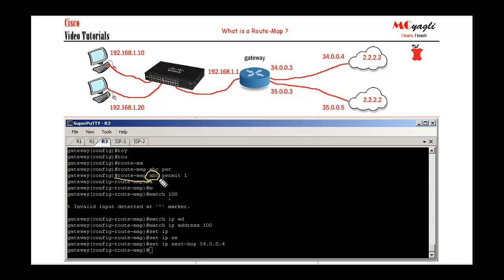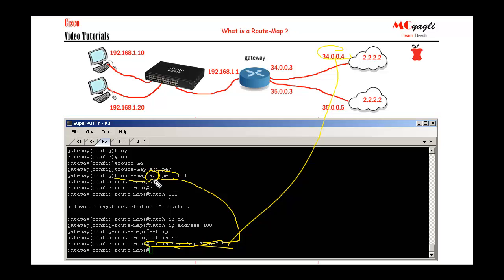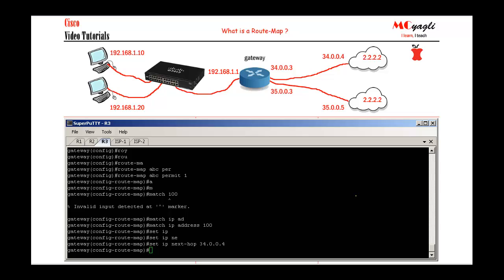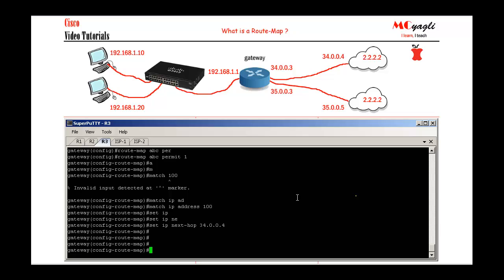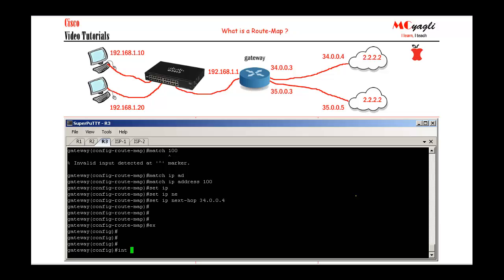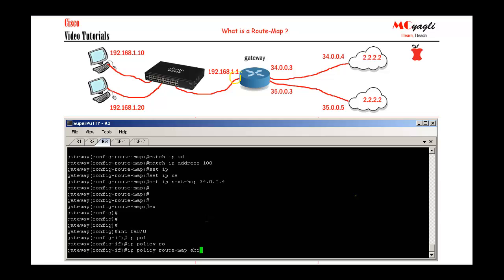Let's talk about this route map. 'ABC' is the name, permit means do — and since I'm applying it to PBR, permit means policy-route and set the next-hop IP address to 34.0.0.4. There is also an implicit deny statement, which means it will not policy-route the traffic outside the bucket. Now I apply it to the interface using 'ip policy route-map ABC.' That's how you apply a route map to PBR.